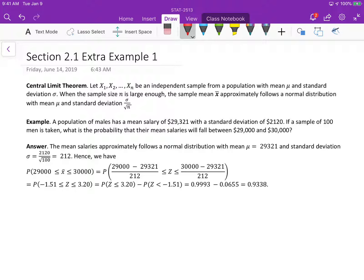When the sample size n is large enough, the sample mean x bar approximately follows a normal distribution with mean mu and standard deviation sigma over square root n.